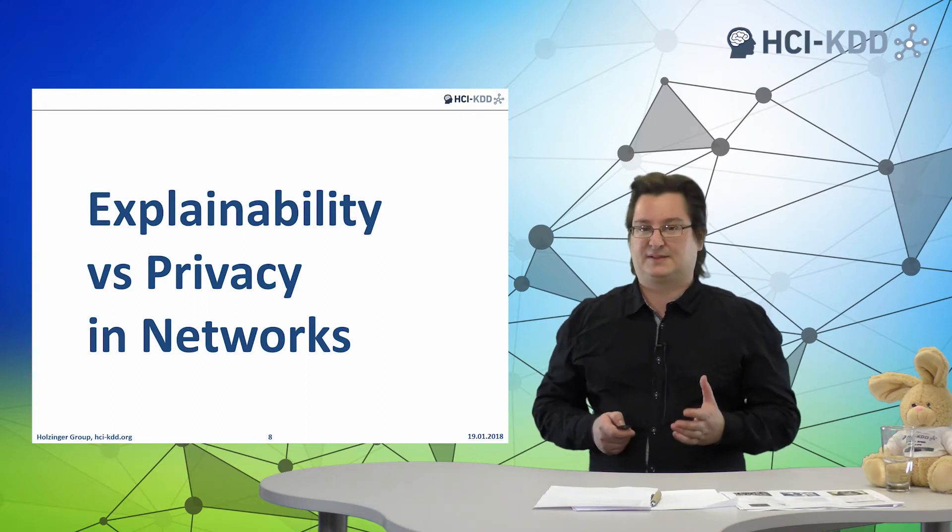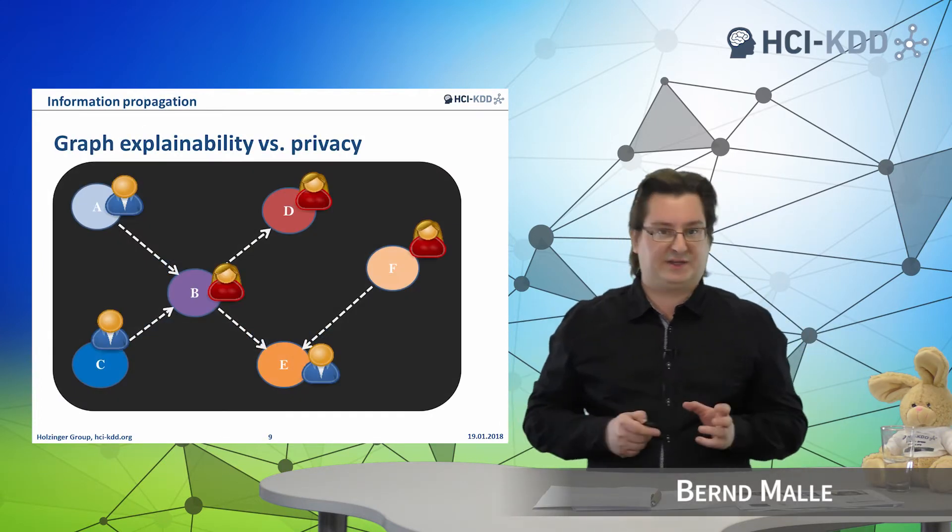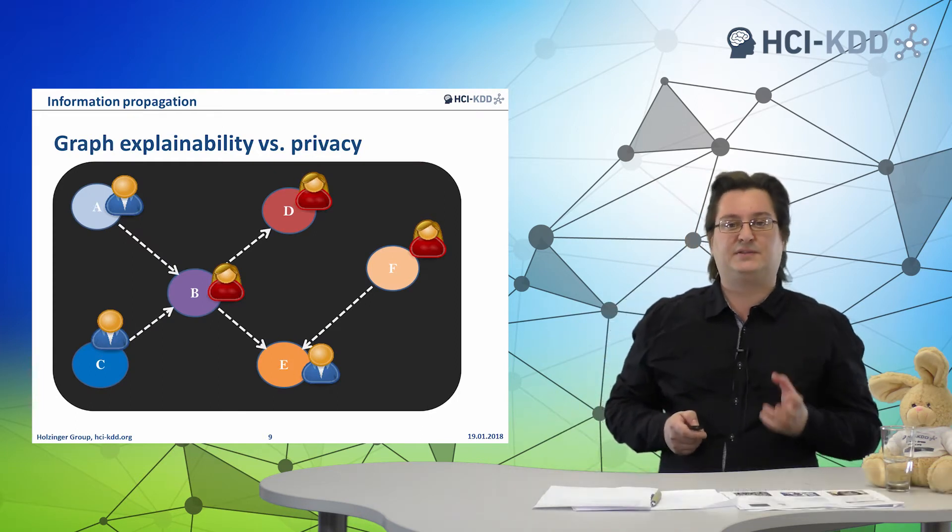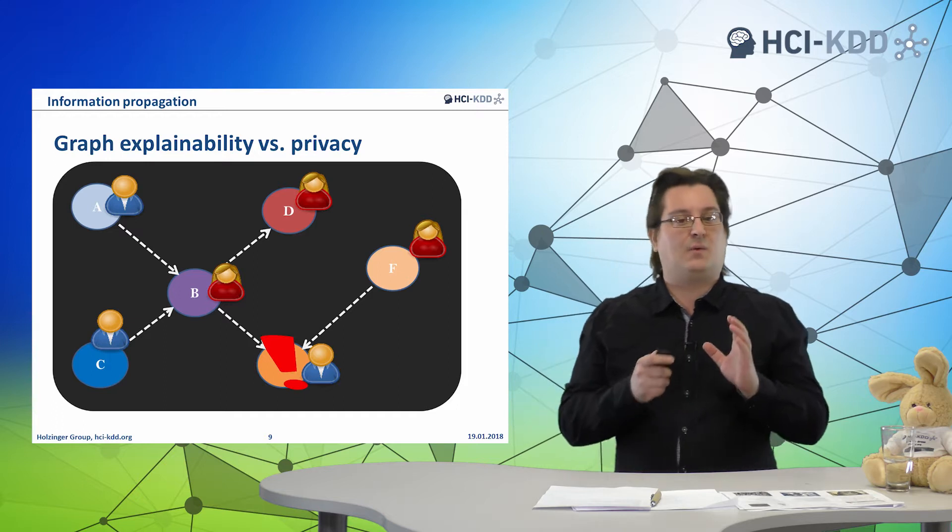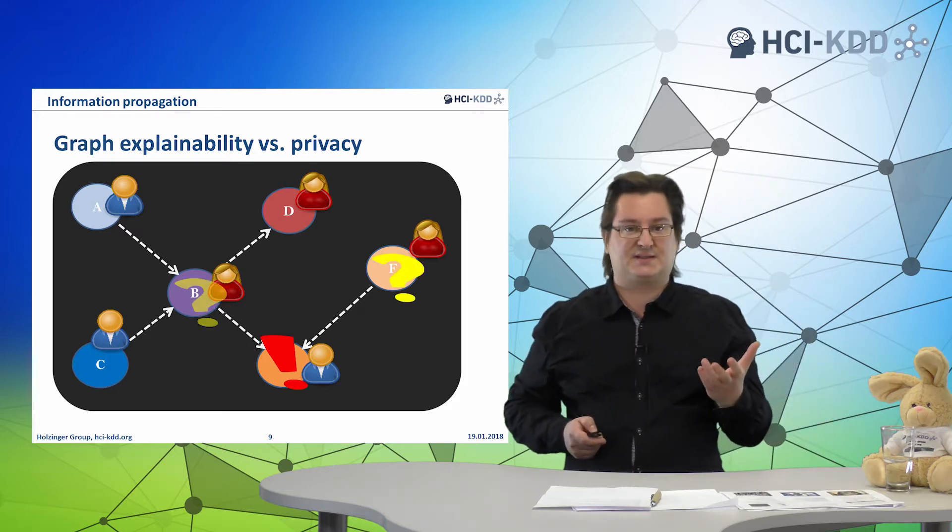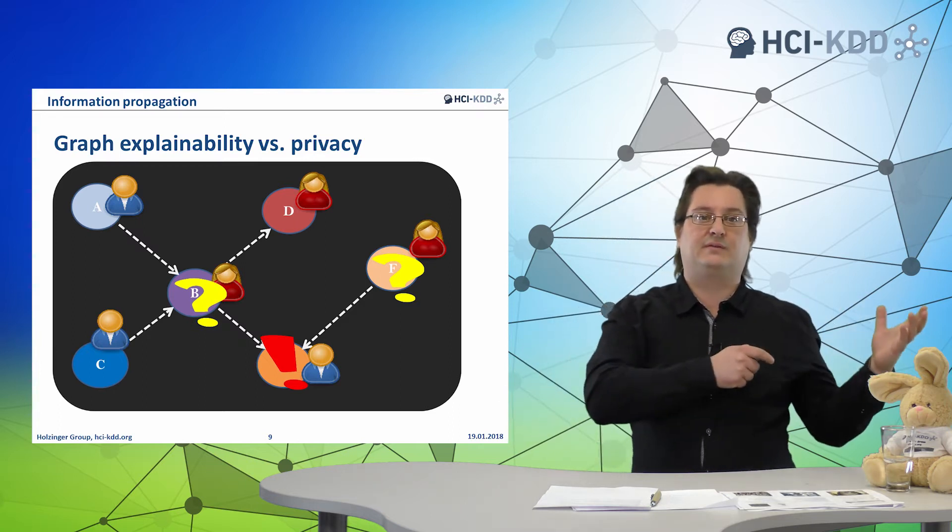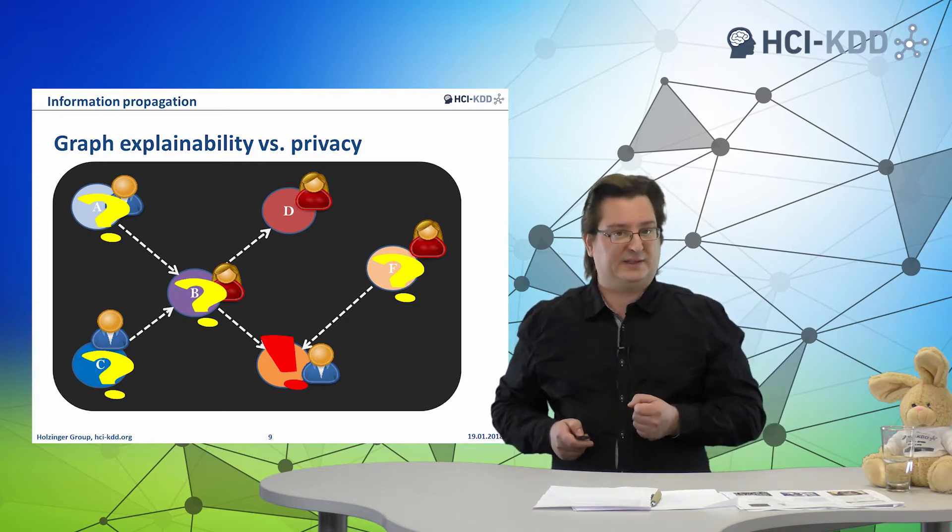So, in a graph theoretical setting, information propagates from one node to the other via edges. What we would like to do is, if we detect a change in the state of one of the nodes, where did this change actually originate? Did it come from one of the adjacent nodes, or did it actually originate from a remote area of the graph? Now, this is what we call explainability.